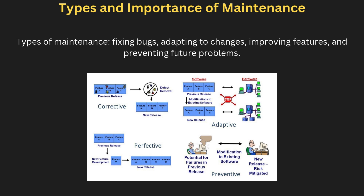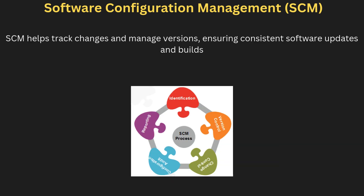Perfective maintenance involves improving performance or adding new features based on user feedback. Lastly, preventive maintenance aims to reduce the chances of future issues by improving the software's structure and readability. These types of maintenance ensure that the software stays reliable, relevant, and efficient throughout its lifecycle.